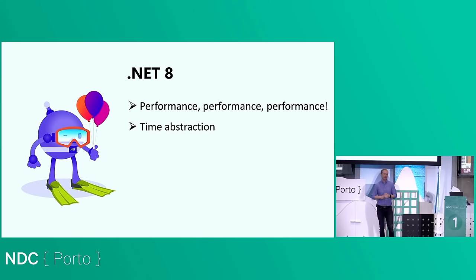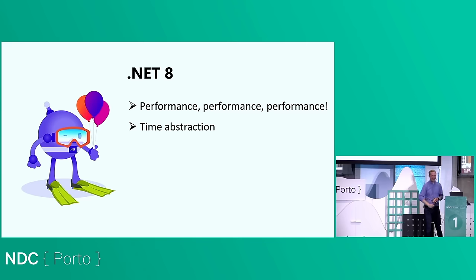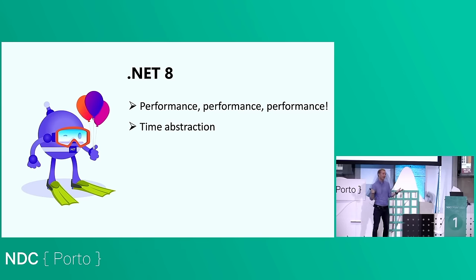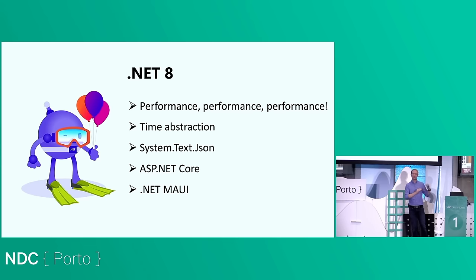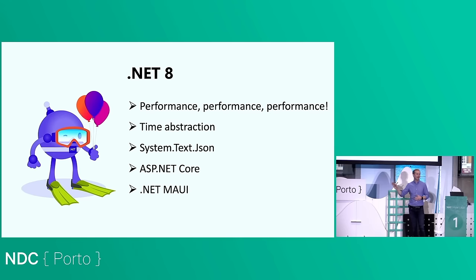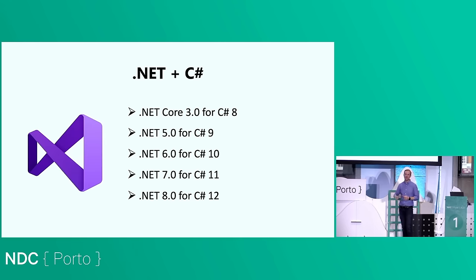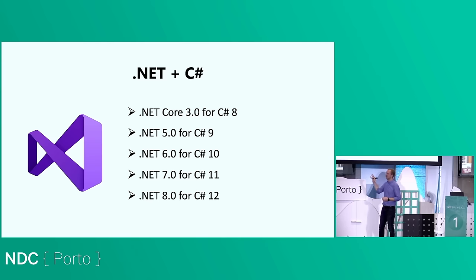The performance improvements in the core APIs are shared across Blazor, ASP.NET Core, .NET MAUI, and console applications. We're also going to talk about time abstractions — a way to improve testability of your code — which is important since most of you write tests. We'll also cover changes in System.Text.Json, ASP.NET Core, .NET MAUI, and a few things in Blazor. It can be a bit confusing because .NET 8 is releasing in mid-November and language features are coupled to the runtime.